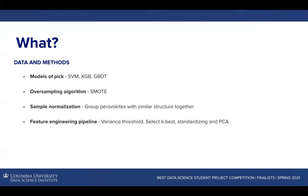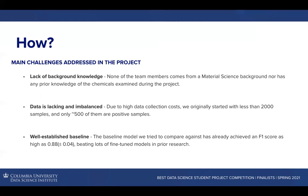To summarize, we have three key challenges to address throughout the project. First, none of us comes from a material science background nor possesses any prior knowledge of the materials we tried to study. Therefore, we had to spend a tremendous amount of effort reviewing relevant literature and analyzing data to transform the questions into ones not just digestible but also solvable for data scientists. Second, due to high data collection cost, we only had around 2,000 samples and only 500 of them belong to the positive class, which pushed us to figure out ways to maximize the use of data by thinking outside the box. Third, the baseline model we compared against had already achieved an F1 score as high as 0.88, meaning the problem is no longer a simple model selection problem. Instead, we had to force ourselves to create something that had not been tried yet.